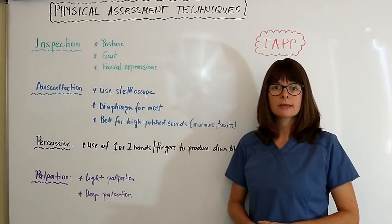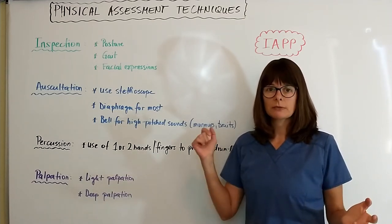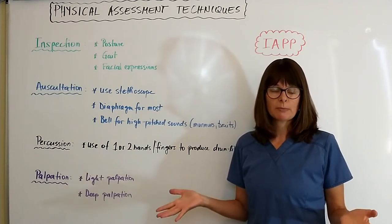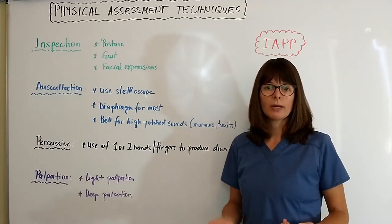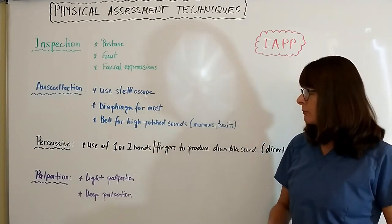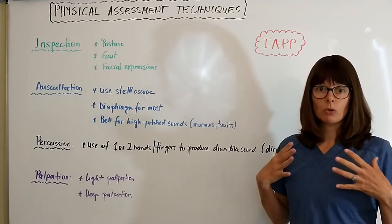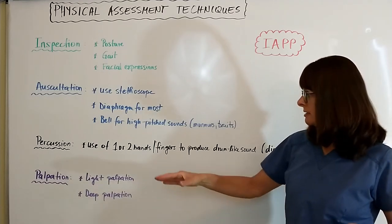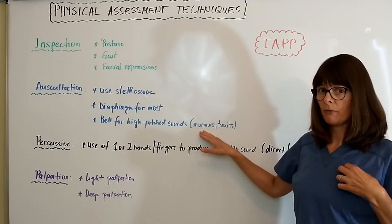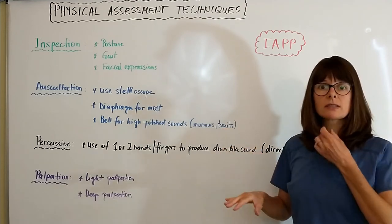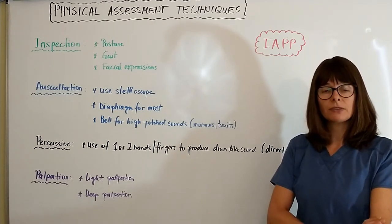The second technique is Auscultation, where we use our stethoscope to listen to the patient's body. There are a variety of stethoscopes from the most inexpensive to the most expensive — watch my separate video to help pick one that works best for you. We use the diaphragm for most auscultation needs, mostly for the heart, lungs, and abdomen. We use the bell for high-pitched sounds such as murmurs over heart valves, and for bruits over the carotid arteries, renal arteries, or a dialysis shunt.